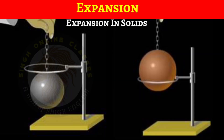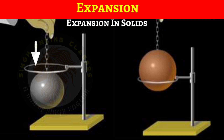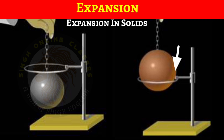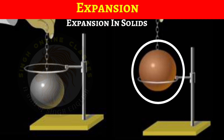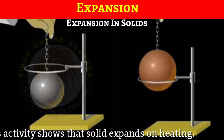Now let's see how expansion in solids occurs. To show this, we perform an activity using a ring and ball apparatus. This apparatus consists of a metal ring and a metal ball. At normal temperature, the ball just passes through the ring. Now we heat the ball and try to pass it through the ring — it will not pass through. The ball has expanded on heating. If we cool the ball to normal temperature, it will pass through the ring again. This activity shows that solids expand on heating.